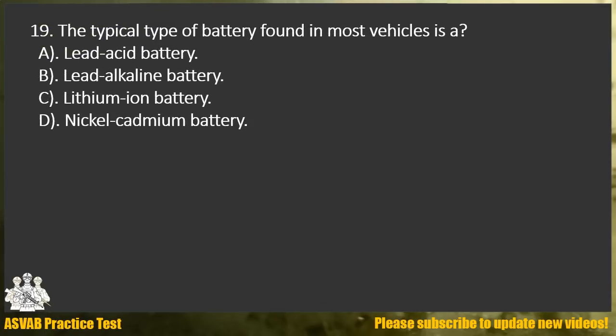Question 19. The typical type of battery found in most vehicles is: A. Lead-acid battery. B. Lead-alkaline battery. C. Lithium-ion battery. D. Nickel-cadmium battery.